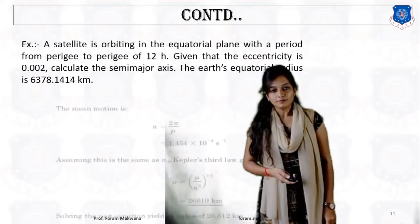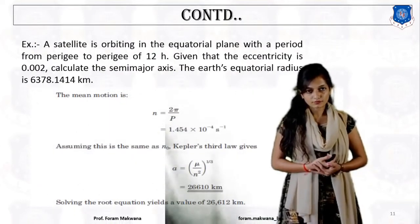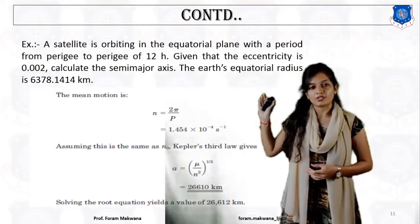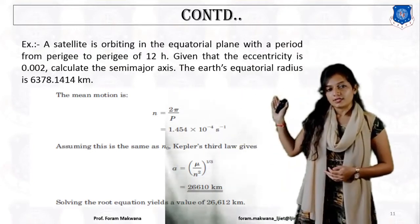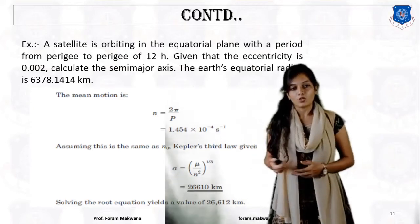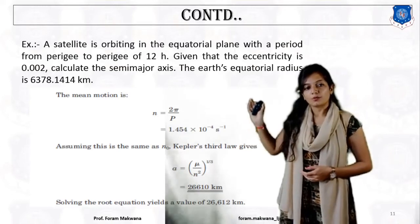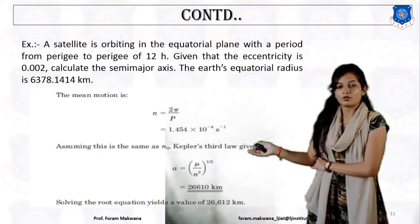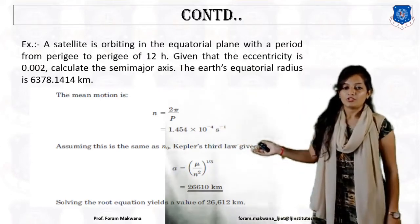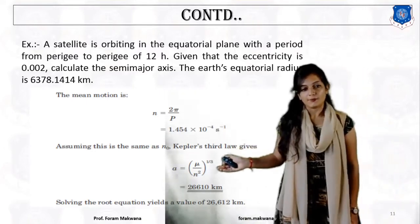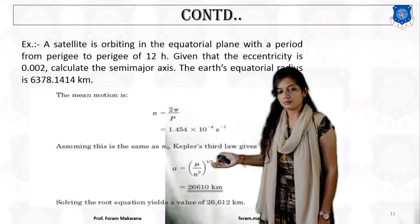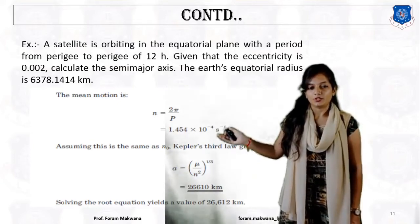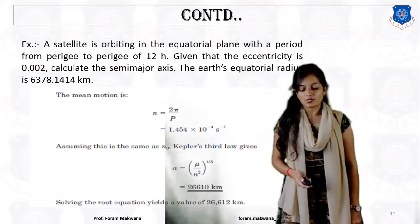Now let's take one example. A satellite is orbiting in the equatorial plane with a given period and eccentricity — we need to calculate the semi-major axis. We know that n equals 2π over P; with a period P of 12 hours we can calculate the mean motion. From the mean motion, using Kepler's third law, the semi-major axis equals (mu over n-squared) raised to 1/3. With mu being constant and n already calculated, we obtain the value of the semi-major axis.